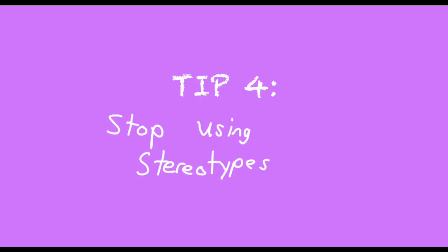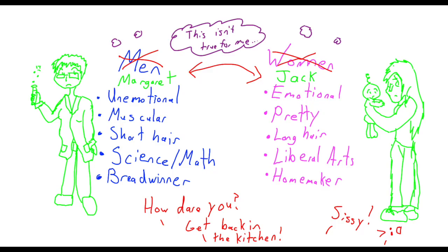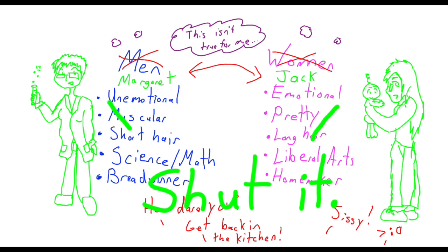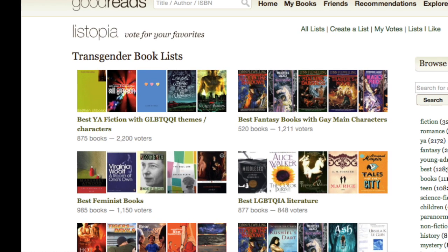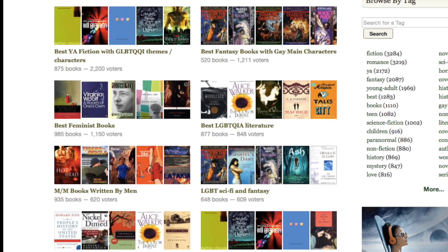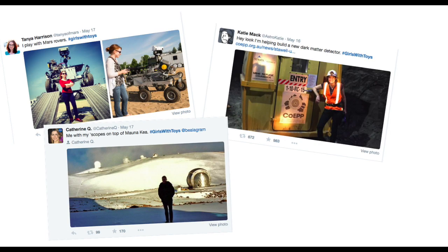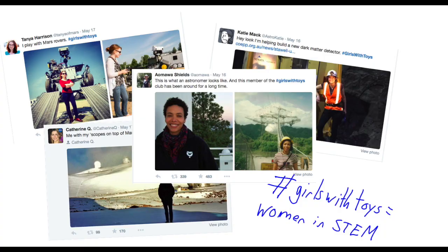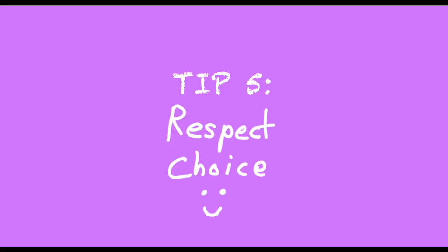Tip four: get rid of stereotypes — but you already knew that. Basically, don't let anyone fall into the trap of science and math fields being 'too masculine' and humanities being 'too feminine.' ELA can choose a variety of texts that showcase non-stereotypical characters, which are usually more interesting anyway. Science — make sure you encourage girls who like STEM fields to pursue it. Tip five: respect choice. Sometimes kids might be going through a phase, but regardless of whether something is permanent or temporary, respect it.